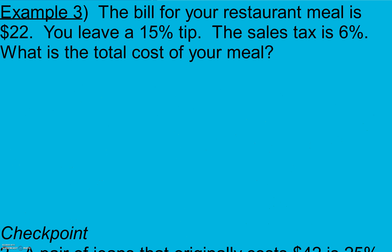Example three: the bill for your restaurant meal is $22. We leave a 15% tip. The sales tax is 6%. What is the total cost of the meal? We have to pay for our meal, plus we leave a 15% tip — that's 15% of the meal cost, which we add on top. A sales tax of 6% is also added. Taxes are an additional amount we have to pay.